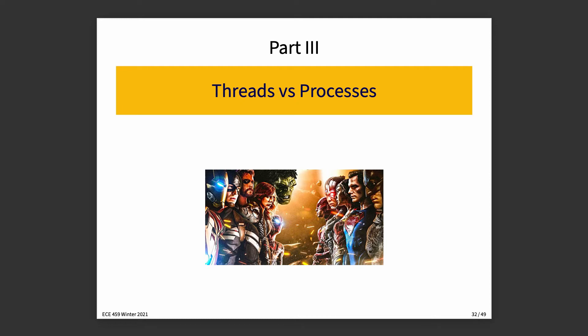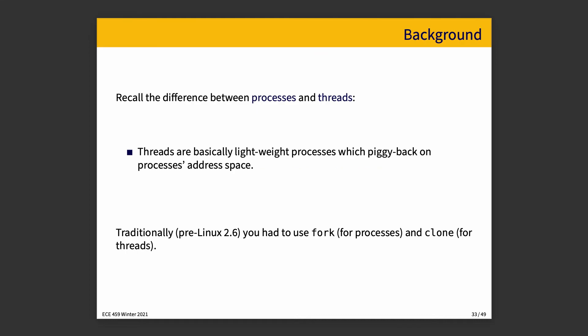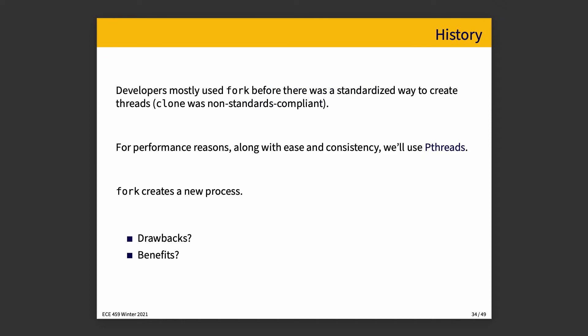The question is: do we choose threads or processes? In Linux 2.6 and earlier, you had to use fork for processes and clone for threads, but it's no longer quite so complicated. Historically, developers mostly used fork before there was a standardized way to create threads, because clone was non-standard compliant. For performance reasons we use software threads. The slide says Pthreads but that's actually wrong, because Pthreads are what we use in C and C++. In Rust we use Rust's regular thread mechanism. Fork creates a new process, and Rust does have the concept of spawning a new process.